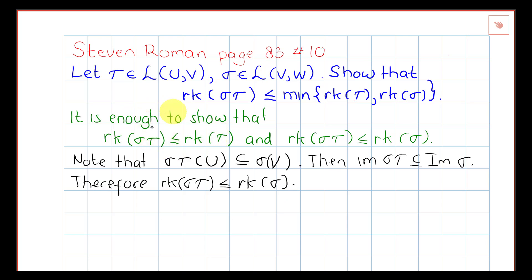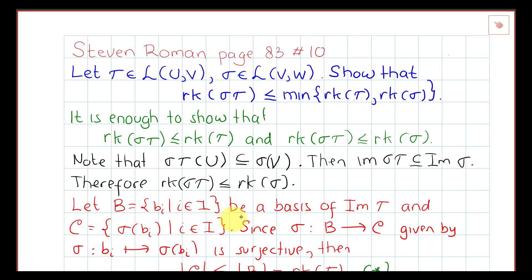Now we prove the other inequality. Let B be a basis of the image of tau, and let C be all the images of b_i under sigma. We can think of sigma as a map from B to C, which maps each b_i to sigma(b_i). This map is surjective because every element of C has a preimage in B.